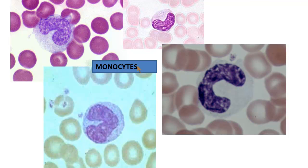Monocytes are the largest of the white blood cells. Like lymphocytes, they have pale cytoplasm, but they have a U-shaped or kidney-bean-shaped nucleus — you can see that characteristic in each of these monocytes here. These cells circulate through the blood but can leave through spaces between the cells lining the capillaries to fight infection in the tissues. When they leave the blood and enter the tissues, we call them macrophages. Monocytes are especially prevalent when someone has a long-term infection, like tuberculosis or Lyme's disease.